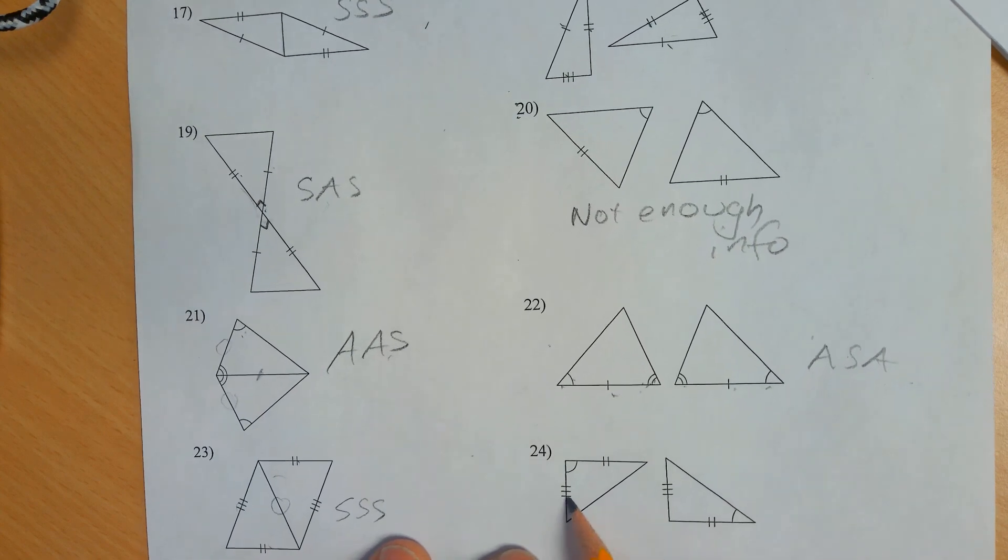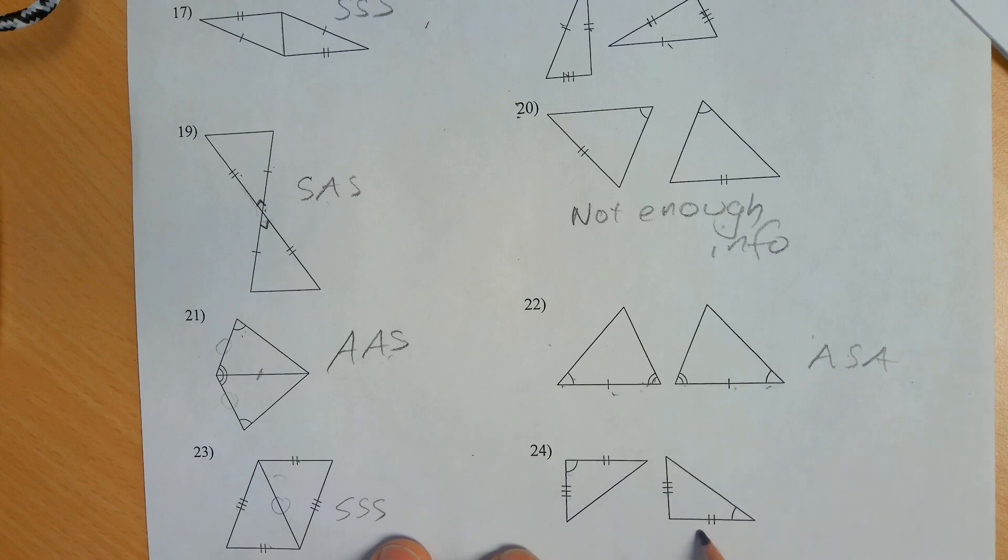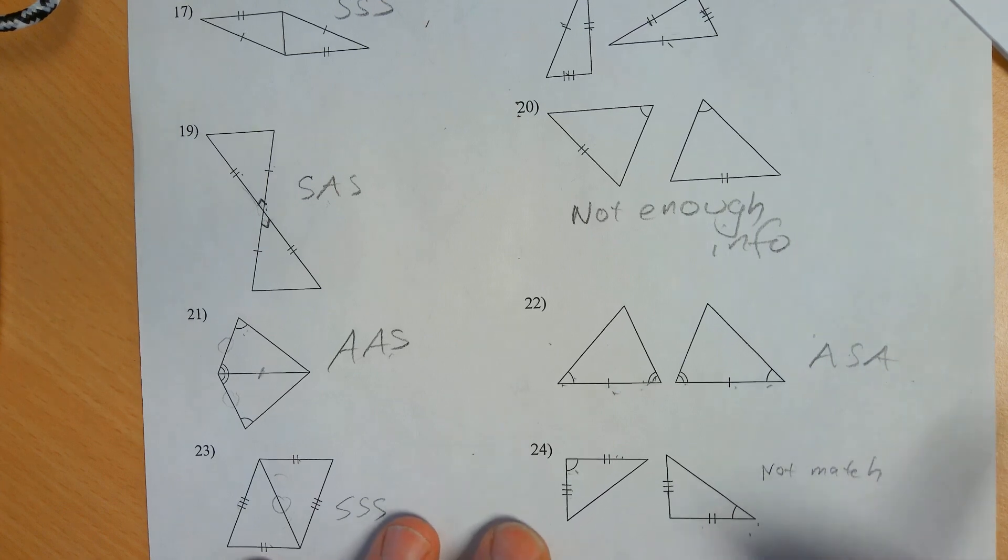And what's going on here? Two angles and the side in between them. Two angles and the... Sorry. Two sides and the angle in between them. Two sides and some other angle. Wait a second. This doesn't match. Not match. Not enough information. Not enough information. Not enough information. However, let's go on a deeper level here.